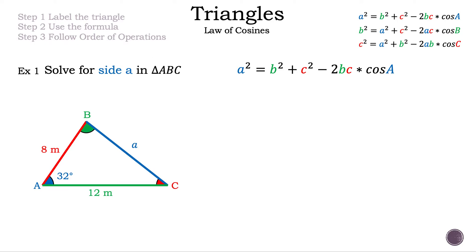Why did we choose this formula? Since we are solving for side A, we choose the formula with cosine A so the A's are on the outside and we don't have to rearrange any terms. The image gives us three measurements: 8 meters for side C, 32 degrees for angle A, and 12 meters for side B — meaning this is an SAS (side-angle-side) triangle.